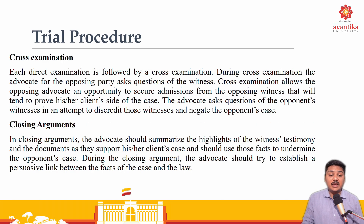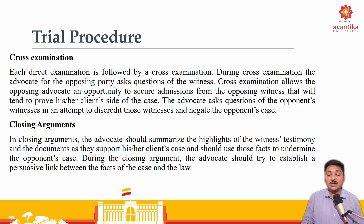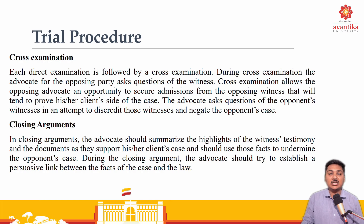Next is cross-examination. Each direct examination is followed by a cross-examination. During cross-examination, the advocate for the opposing party asks questions to the witness. The defendant's counsel asks questions to the witness of the plaintiff's party and tries to discredit those witnesses. Next is closing arguments. In the closing argument, the advocate should summarize the highlights of the witness testimony and documents as they support the client's case, and should use those facts to undermine the opponent's case. During closing arguments, the advocate should try to establish a link between the facts of the case and the facts of the law. This is the basic trial procedure that we follow in our country.